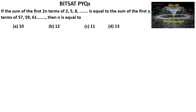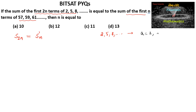Given that the sum of the first 2n terms of the sequence 2, 5, 8, ... is equal to the sum of the first n terms of the sequence 57, 59, 61, ... Let us consider S₂ₙ of the first sequence equal to Sₙ of the second sequence. The first sequence has first term a = 2 and common difference d = 3.